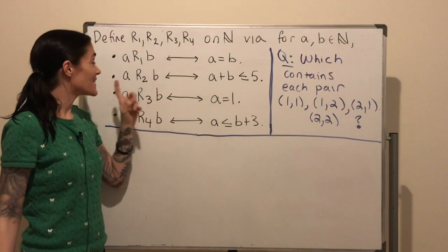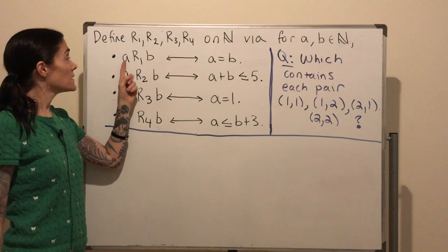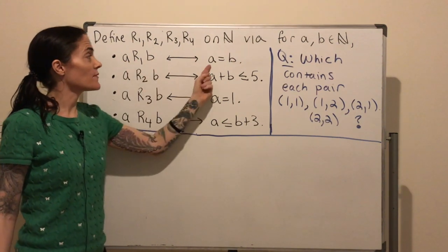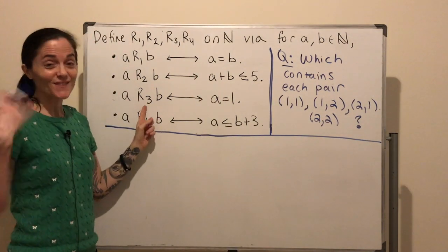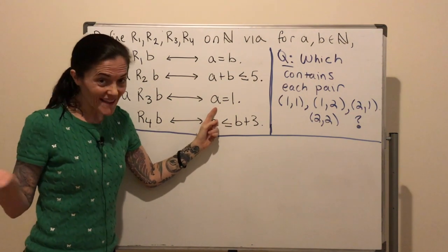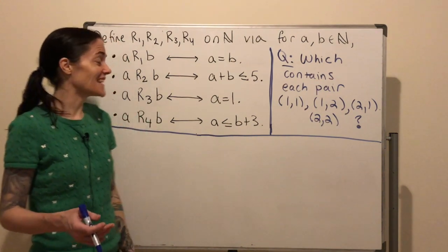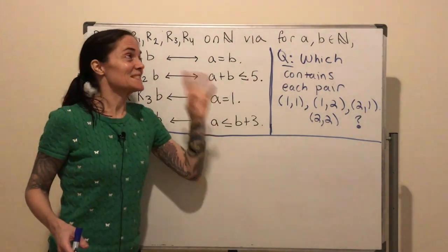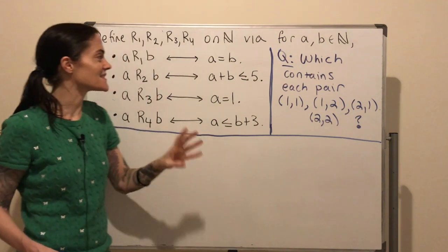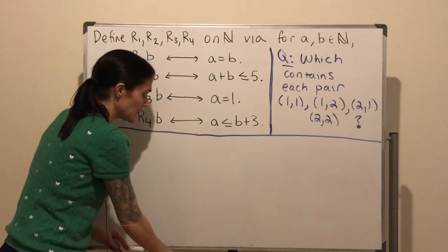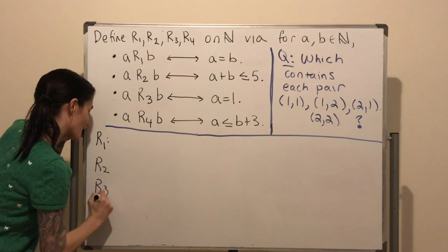This next example has four relations on natural numbers. I'm defining R1, R2, R3, R4 as follows. In R1, a relates to b provided a equals b. In R2, a relates to b provided a plus b is less than or equal to 5. In R3, a relates to b provided a equals 1. And in R4, a relates to b provided a is less than or equal to b plus 3. The question is: which of these relations contain all four of these specific pairs?